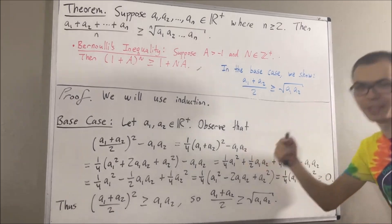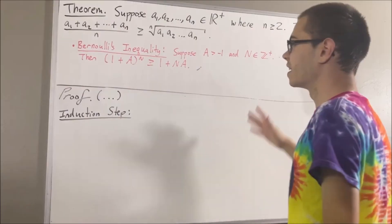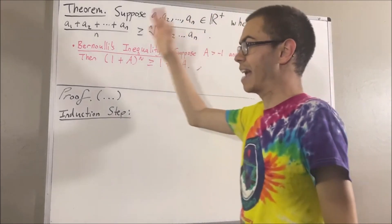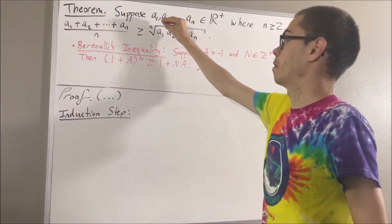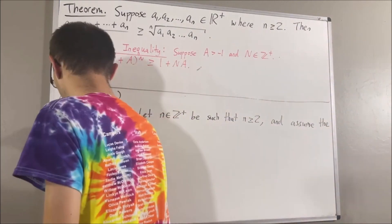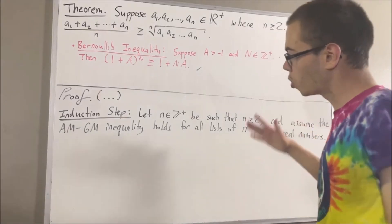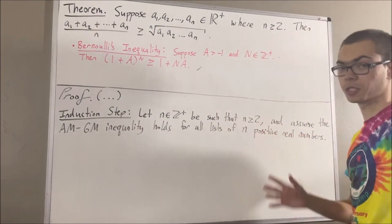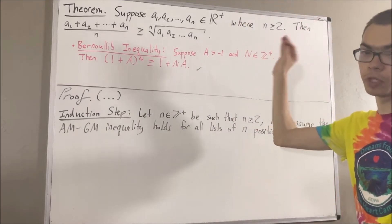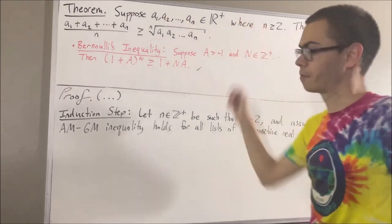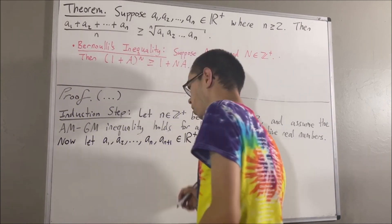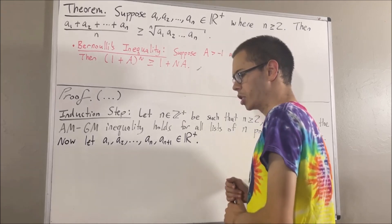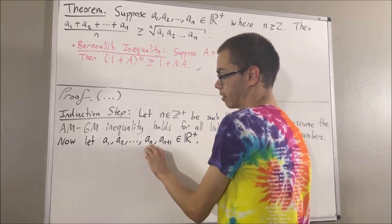Now, let's move on to the induction step. In the induction step, we give ourselves an arbitrary positive integer n greater than or equal to 2, and we're assuming that the AM-GM inequality holds for all lists of n positive real numbers. The whole goal of the induction step is to show that the AM-GM inequality holds for all lists of n plus 1 positive real numbers. So, let's give ourselves an arbitrary list of n plus 1 positive real numbers — a1 through an plus 1. For convenience, we are going to denote a1 plus a2 plus dot dot dot plus an by Sn.